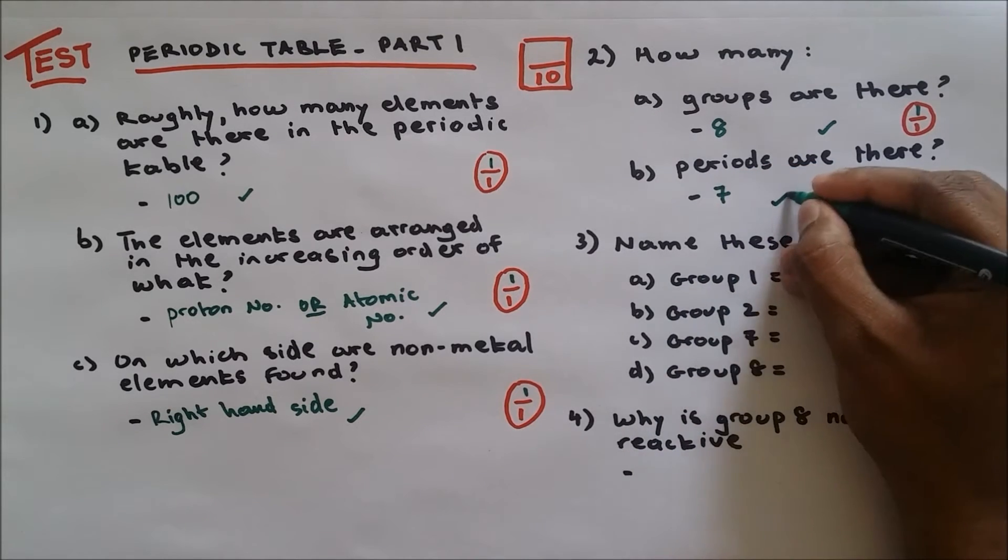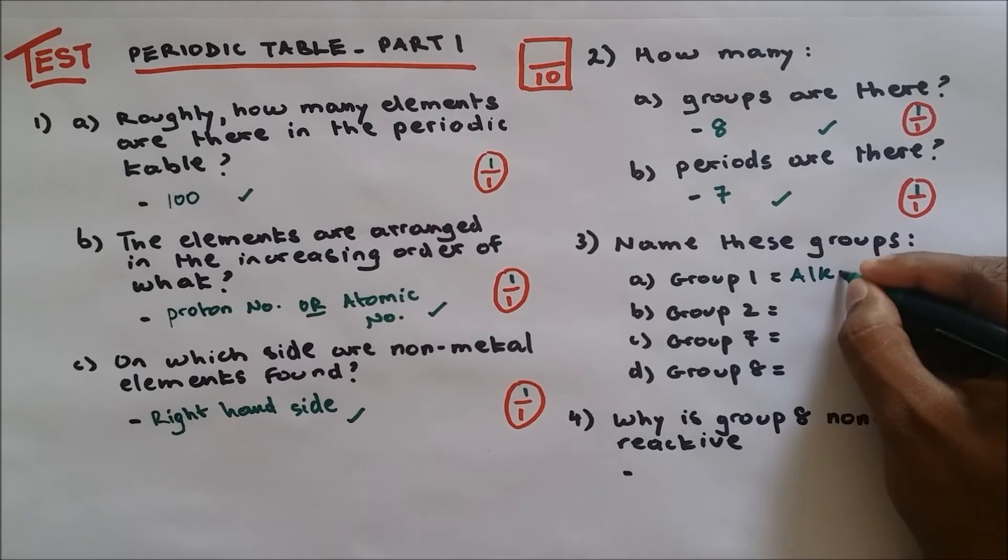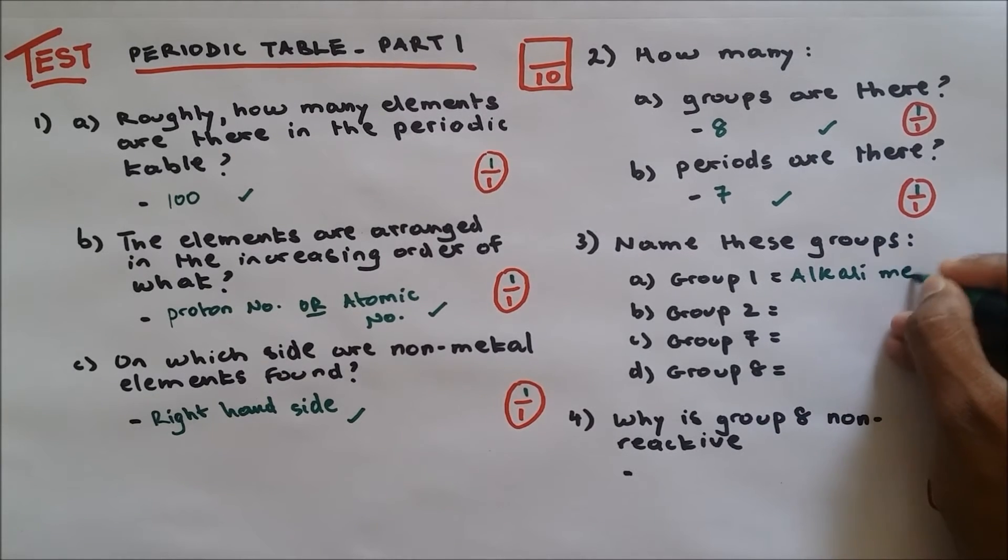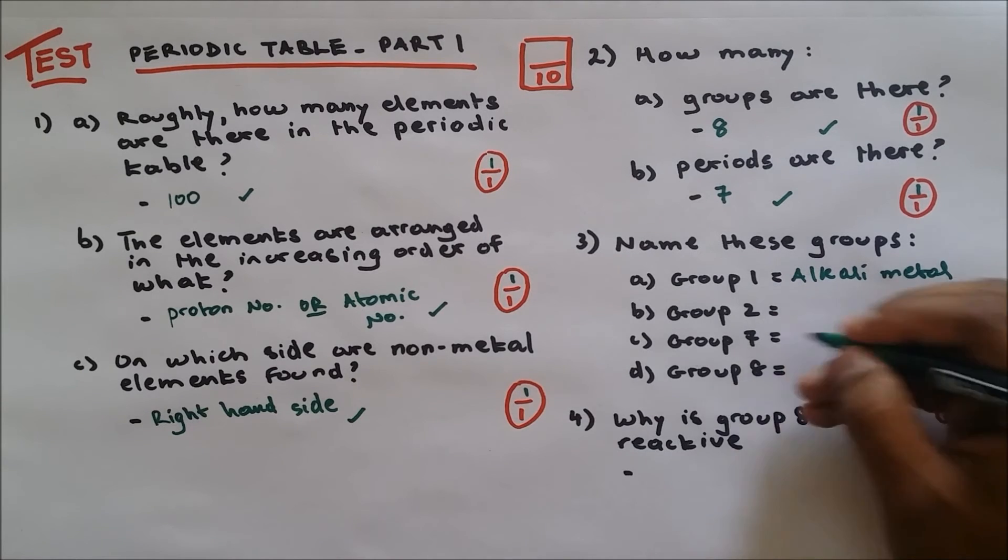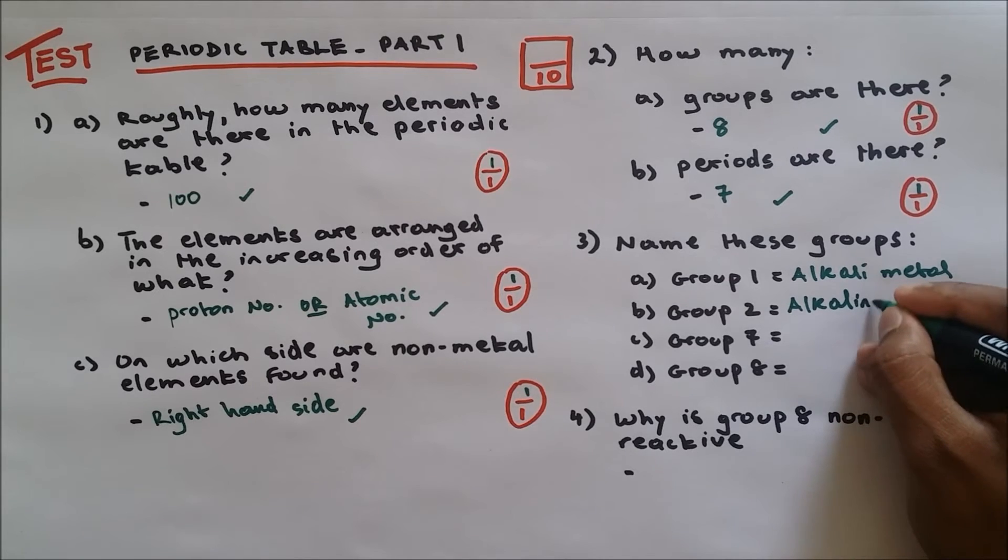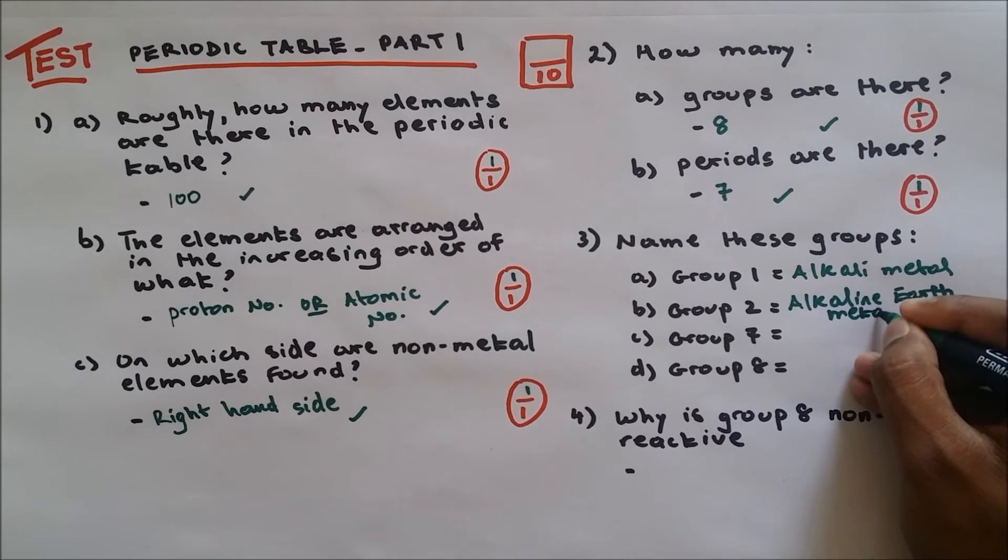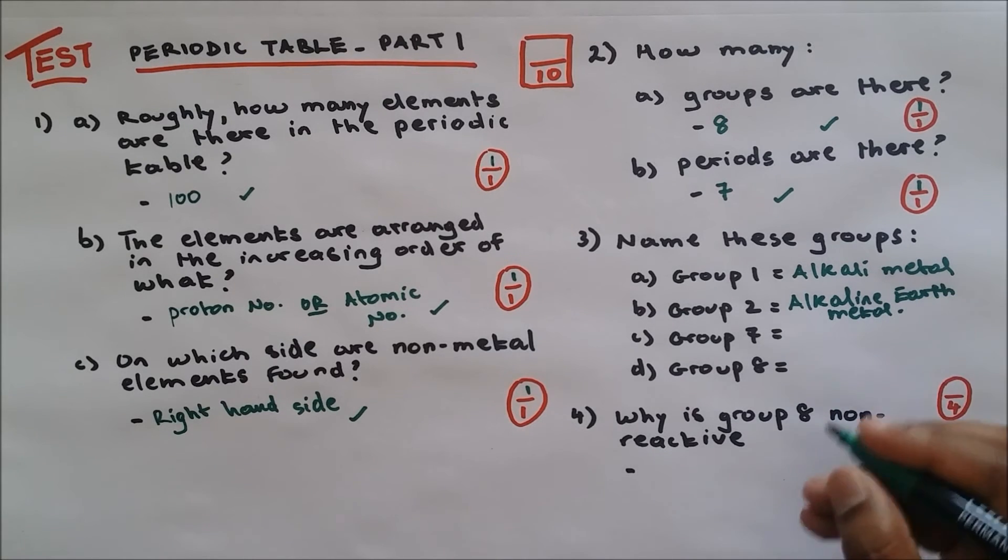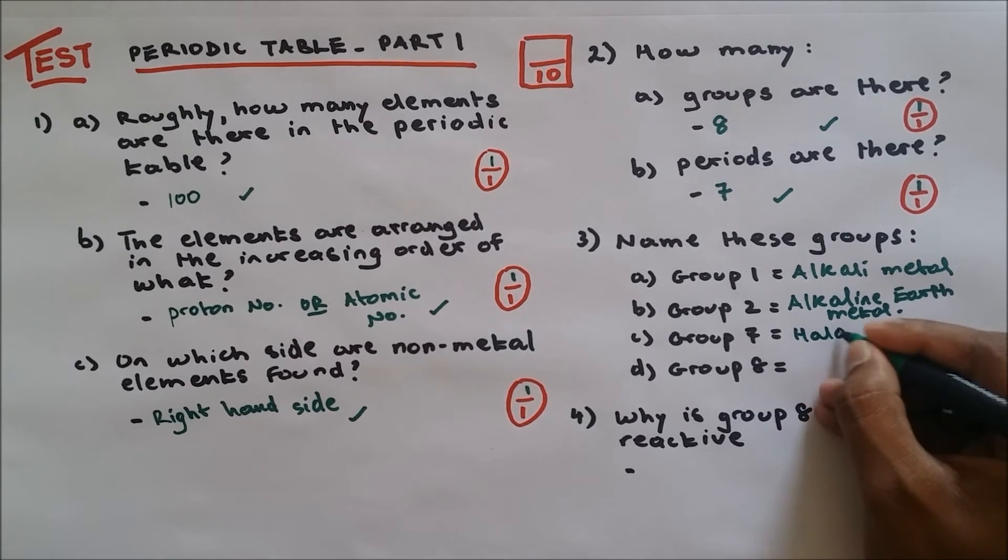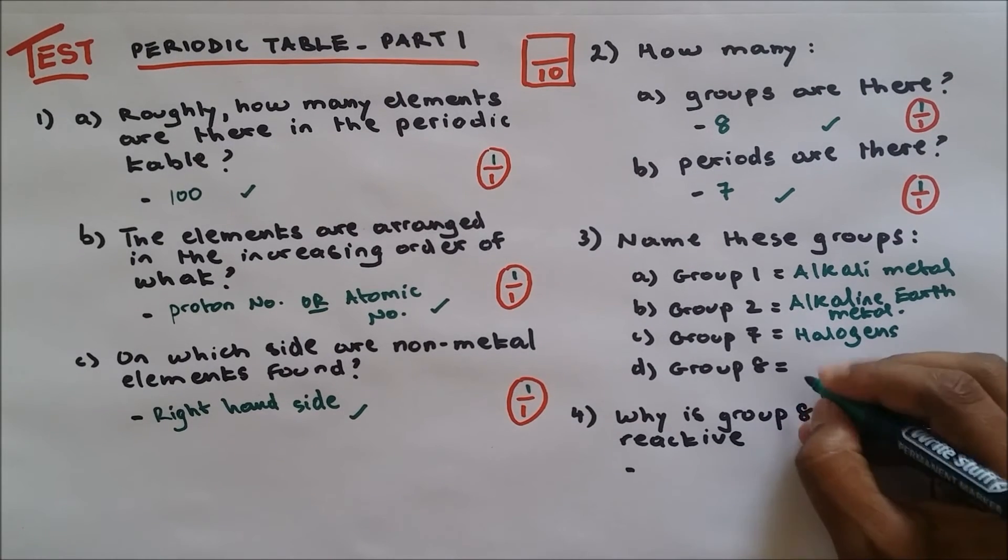Question number three: name these groups. Group one is called alkali metal. If you got it right, well done. Group two: alkaline metal. Group seven is called halogens. Group eight: there's two names, you can either put noble gas or you can write inert gas.